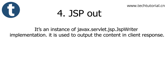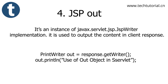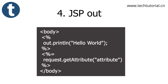The JSP out object is an instance of JSPWriter implementation. It is used to output content in the client response. In a servlet, you would get the PrintWriter object using response.getWriter(), but in JSP the out variable is directly available for use. For example, in an expression tag: out.println("Hello World"). All expressions go in as arguments to out.println.